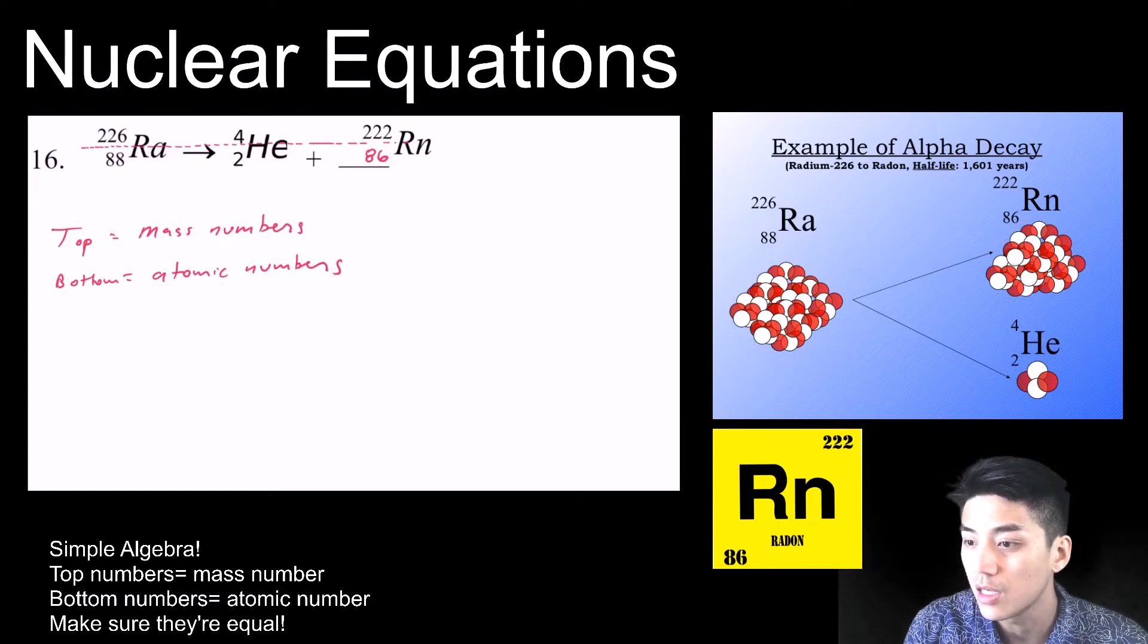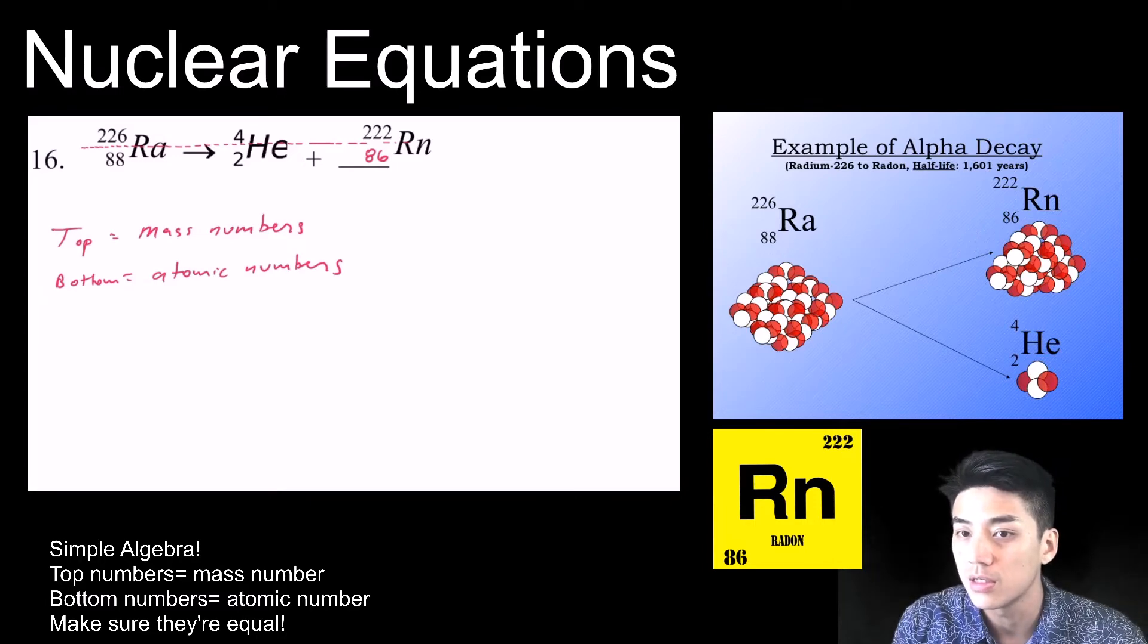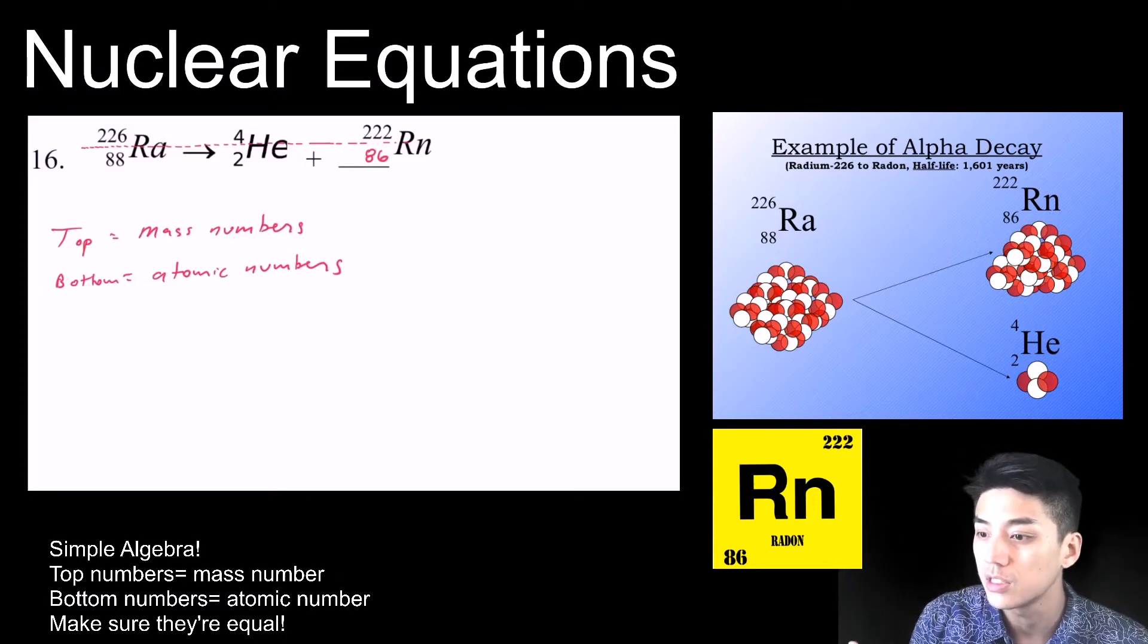So you can see in that yellow card there, you can look on any periodic table, atomic number 86 is radon. Radon has 86 protons. So what this equation is telling you is basically that illustration that's above me.